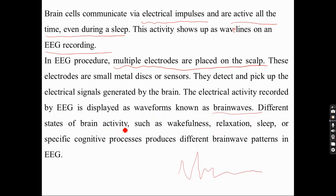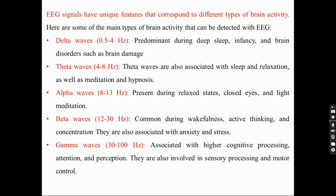Different states of brain activity — such as wakefulness, relaxation, sleep, specific cognitive processes like problem-solving and thinking — produce different brain wave patterns. As brain activity differs, the wave patterns observed also differ. EEG signals have unique features that correspond to different types of brain activity.